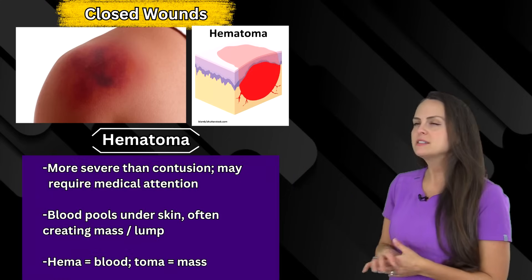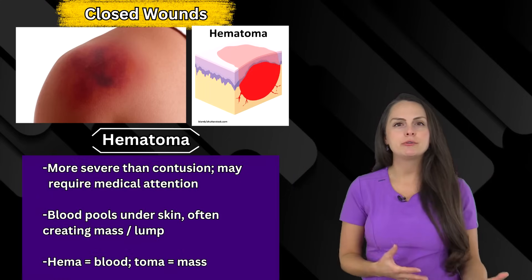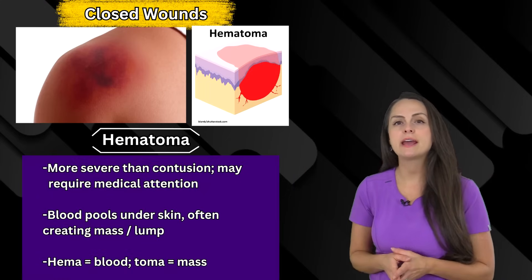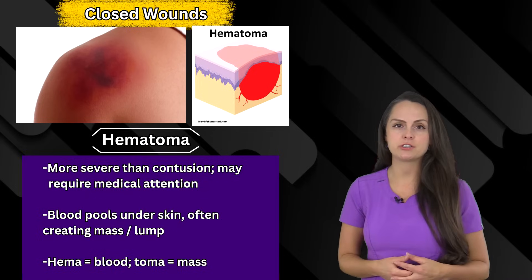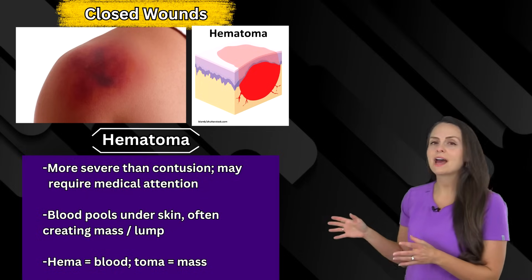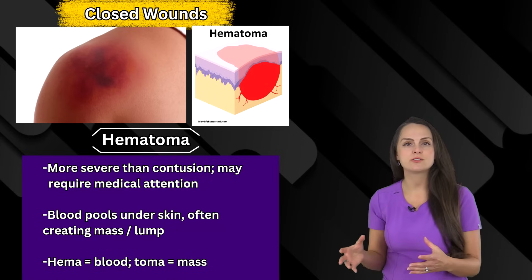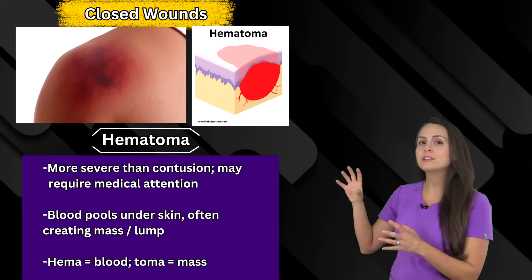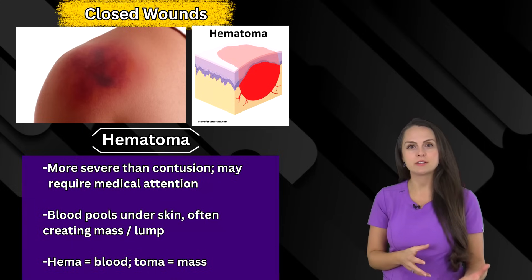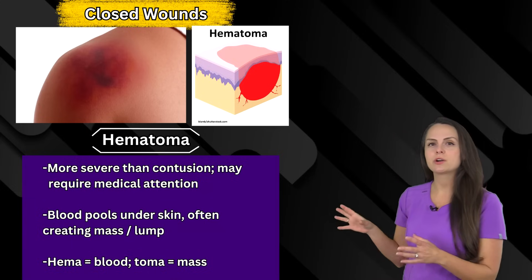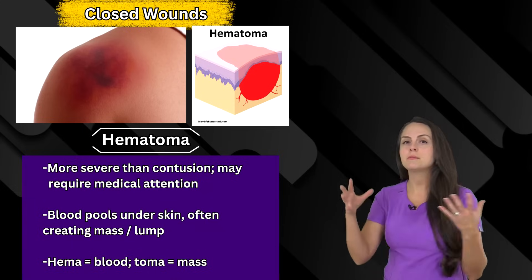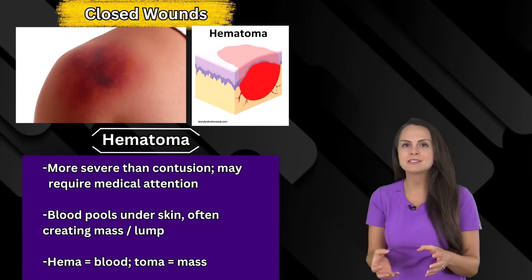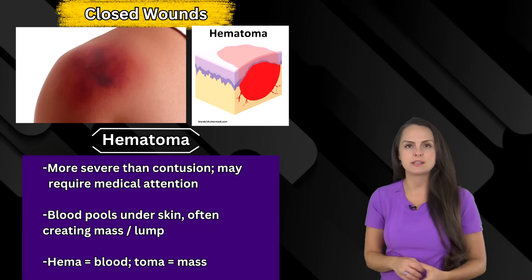Next is hematoma. This is similar to a contusion because it's caused by trauma, but it tends to be more severe and in some cases may require medical intervention. The reason for this is because we have damage to those underlying vessels, causing blood to pool underneath the skin creating a hardened lump area. The prefix heme means blood and toma refers to a mass — so we have this bloody mass underneath the skin.